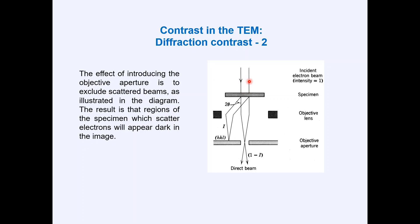Here we have the incident electron beam with intensity equal to one. This is the specimen, and here you can see the objective lens. By placing the objective aperture here, you can see what happens with the beam. One beam is the diffracted beam and the other is the direct beam. The effect of introducing the objective aperture is to exclude the scattered beam. Once you introduce the objective aperture, the regions of the specimen which scatter electrons will appear dark in the image.